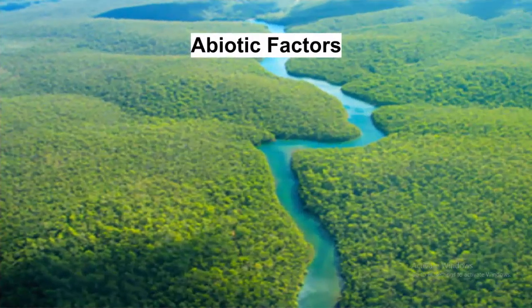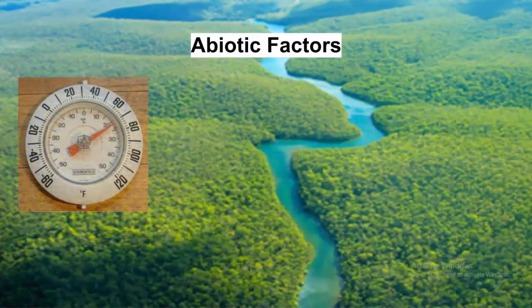So let's start off with the abiotic factors. The temperature is on average around 70 to 85 degrees Fahrenheit, or 21 to 30 degrees Celsius, all year round, so it's always very warm.